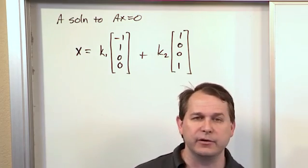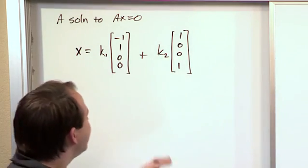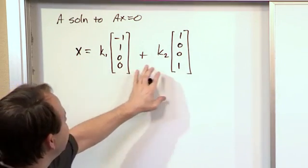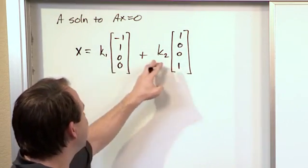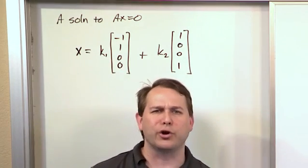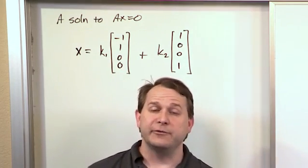So the solution is really a linear combination. There's that word linear again. Linear means that we're multiplying by numbers and not exponentials or logarithms or something. And combination means we're adding them together.